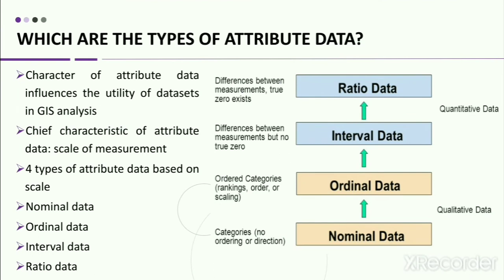Each spatial entity may have one or more attributes associated with it. For example, a point representing a building may have attributes like the number of rooms, the name and address of the owner, and so on. Attribute data gives additional information about the character of an entity and allows certain GIS operations to be performed where the characteristic of an entity is under scrutiny. There are four types of attribute data: nominal data, ordinal data, interval data, and ratio data.